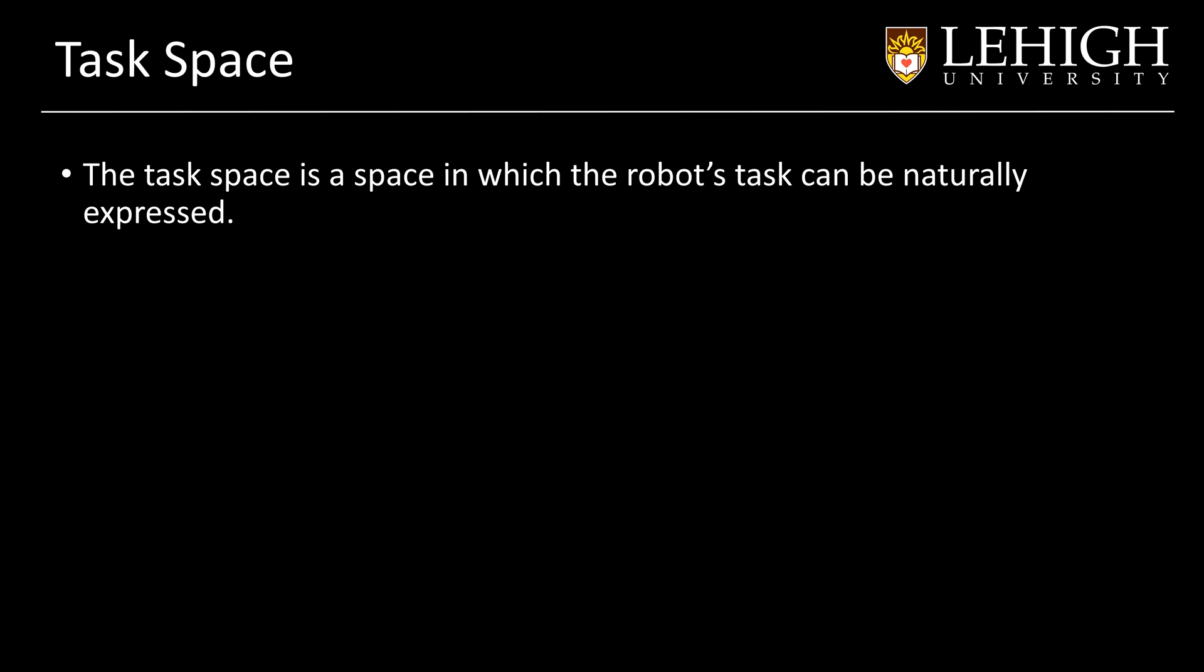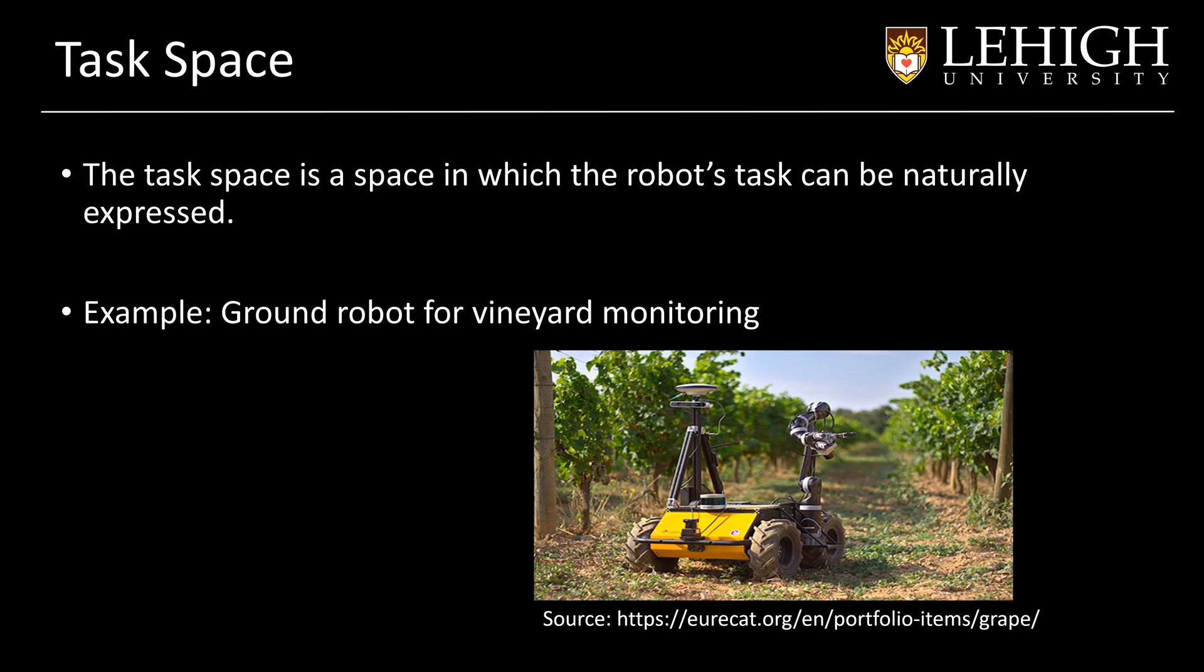We have been talking about the abstract configuration space, but what we are interested in is actually the task space, which is a subspace of the configuration space where the robot is going to perform its task. For example, if we have a ground robot on a vineyard for monitoring, we have the robot that can move, and if we abstract the location of the robot and how it can move, the coordinates and the robot might be in the plane. What we will have in the end is just a subspace that will be monitored or where the robot is going to move. This area in purple will be the task space.